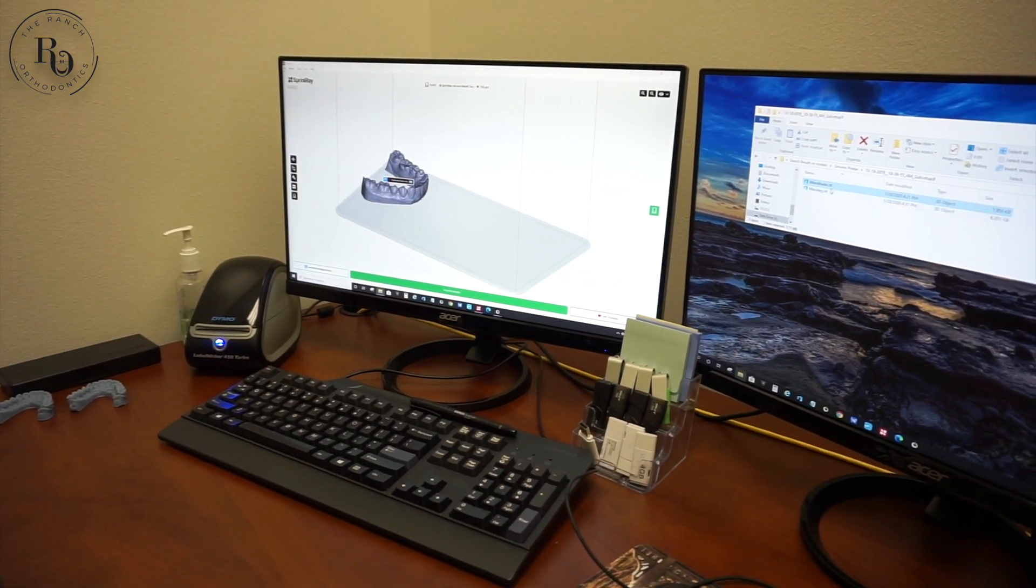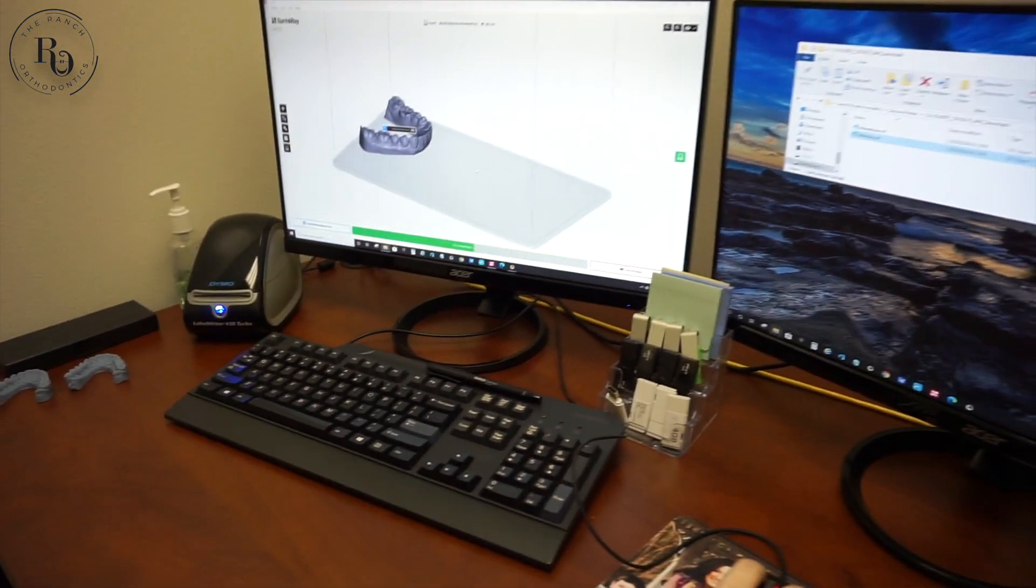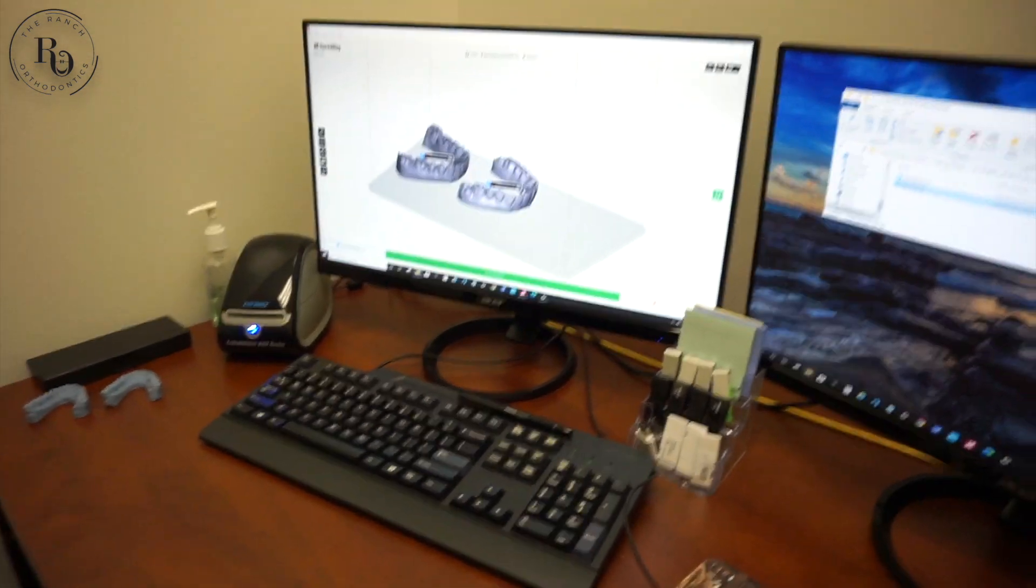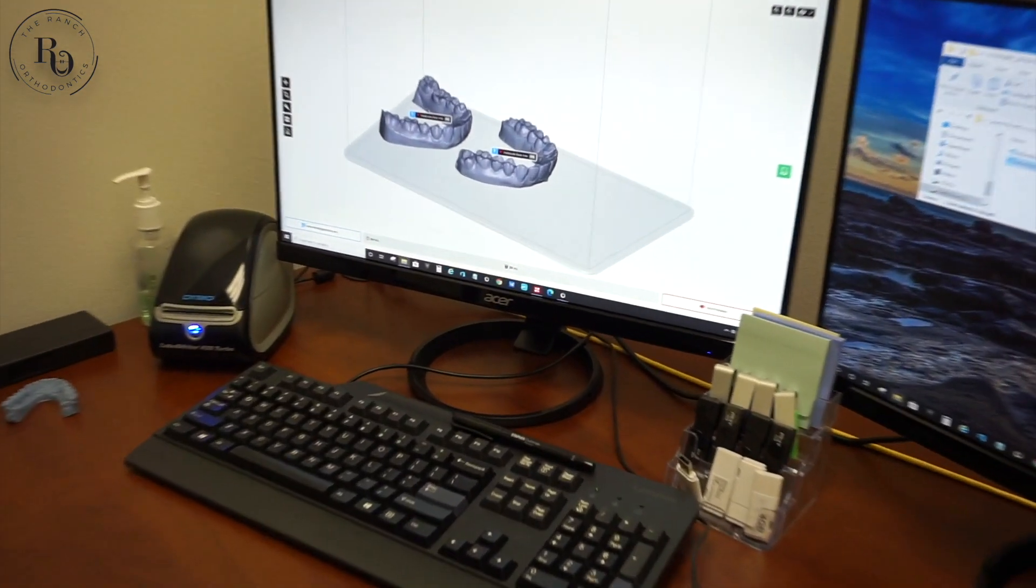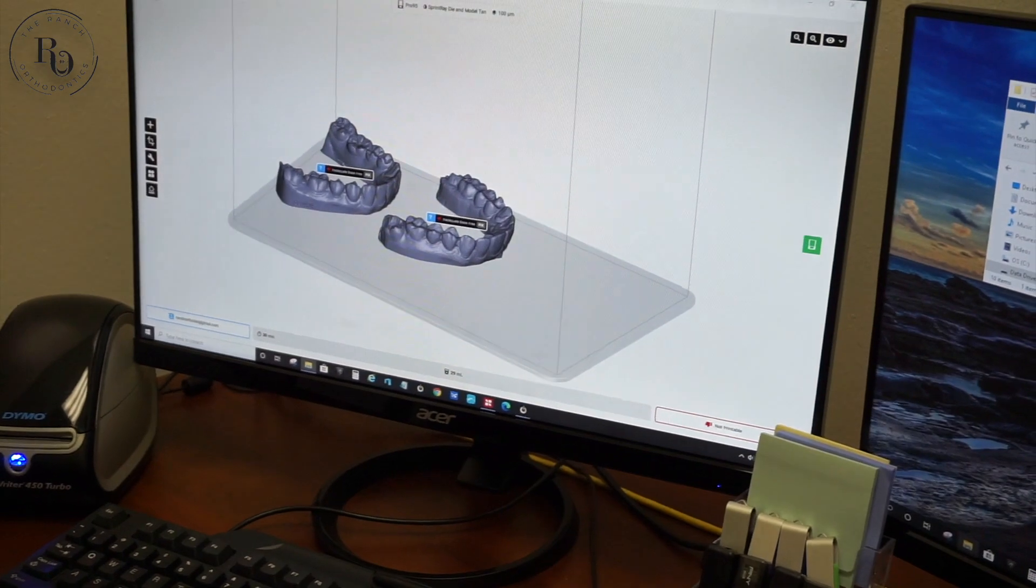The first thing that we do is take each individual file and we are going to load them onto our build platform. This is the first step in getting our prints ready for the 3D printer.